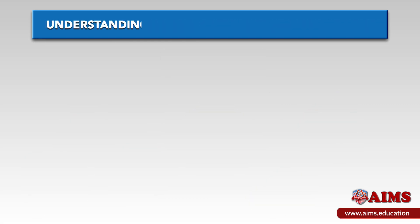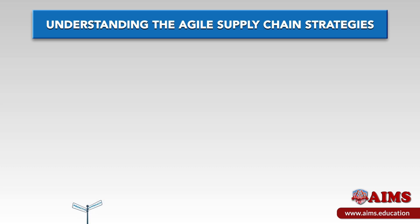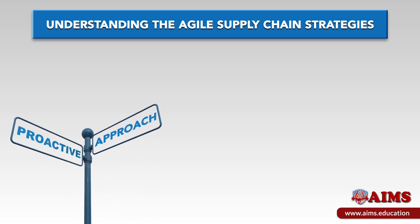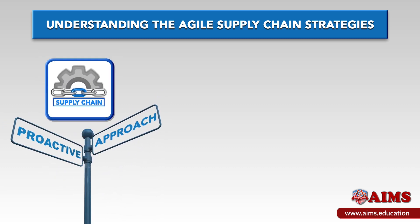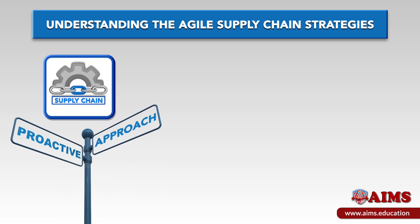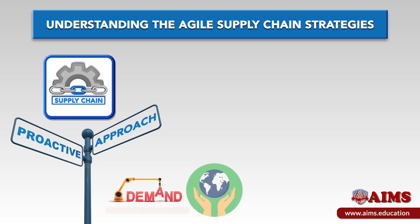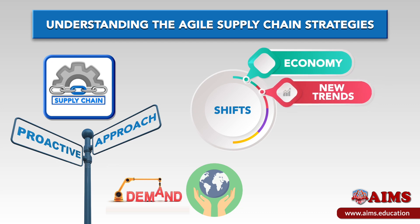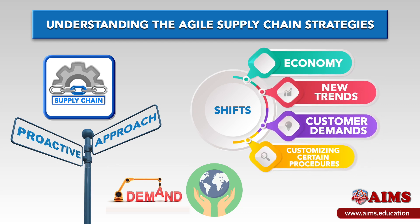Understanding the Agile Supply Chain Strategies. This proactive approach to managing your supply chain means that you can anticipate demand and react swiftly to the changing environment. This means that shifts in the economy, new trends, customer demands, and customizing certain procedures can all be reacted to quickly when you use agile supply chain management. We will explain these factors one by one.